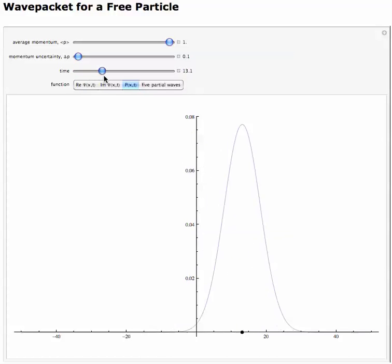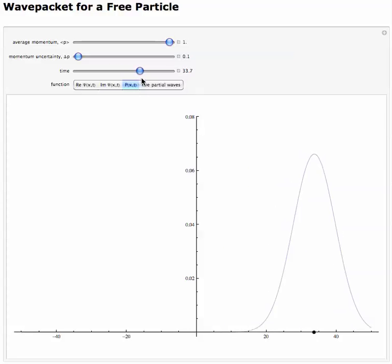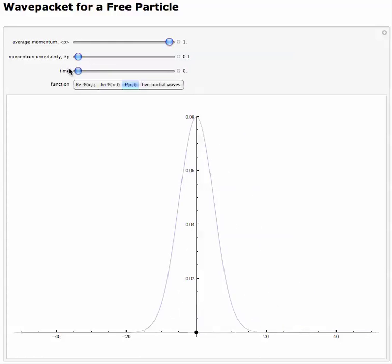And again, if we run time, we see that it's getting a little bit wider, a little bit broader, and the peak probability is going down.